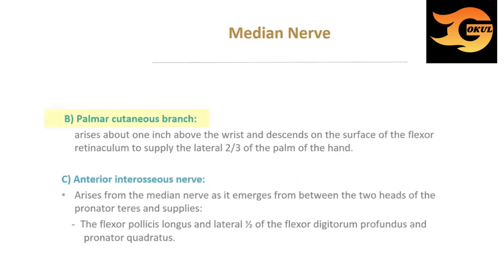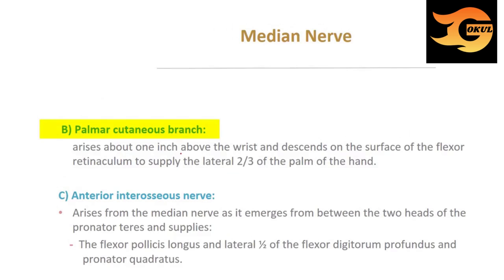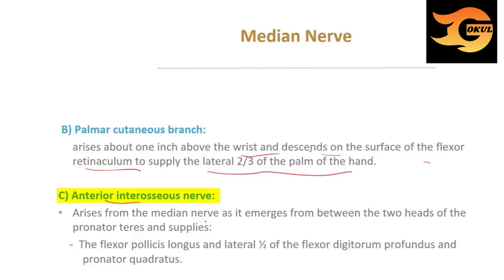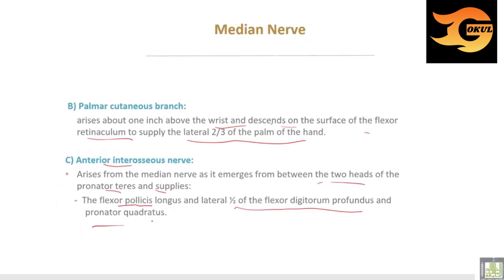The palmar cutaneous branch arises about one inch above the wrist and passes on the surface of the flexor retinaculum to supply the lateral two-thirds of the palm of the hand. The anterior interosseous nerve arises from the median nerve as it emerges from between the two heads of pronator teres muscle, supplying the flexor pollicis longus, the lateral half of the flexor digitorum profundus, and pronator quadratus muscle.